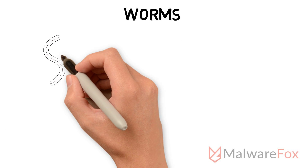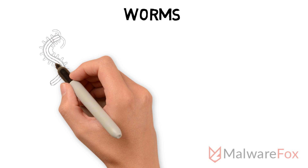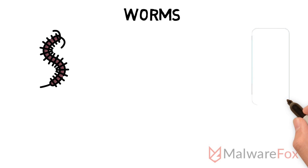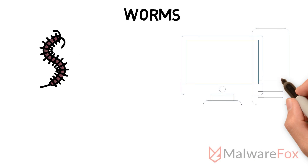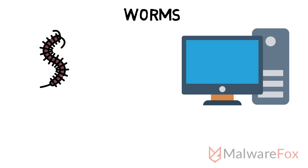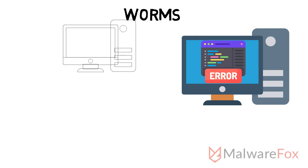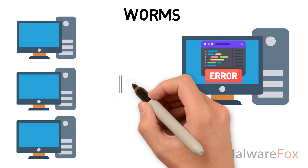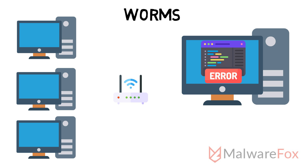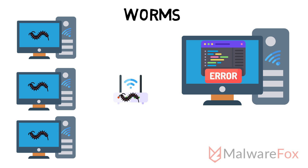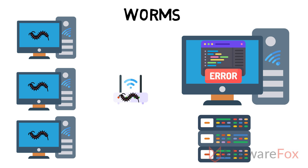Worms: Worms are similar to viruses. While a virus needs the user's action to spread, worms do not require that. Worms can have payloads that could damage the user's computer. They can spread on their own by exploiting network or system vulnerabilities. Worms are designed to overload web servers by consuming bandwidth.